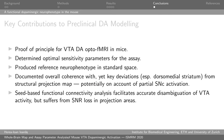In summary, we have established a proof of principle for VTA dopaminergic opto-fMRI in mice. We have determined the optimal sensitivity parameters for the assay regarding both the stimulation protocol and the implant coordinates. We have produced a reference neurophenotype in a standard space and documented overall coherence with a few key deviations from the structural projection map. Lastly, we have implemented a seed-based functional connectivity workflow and shown that it facilitates accurate disambiguation of VTA activity, though it does suffer from SNR loss in projection areas, indicating this is a good candidate for further refinement.